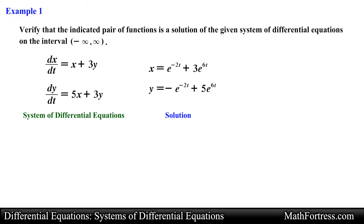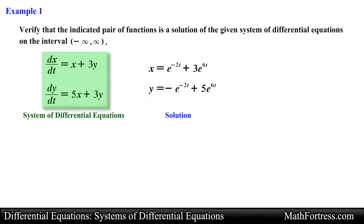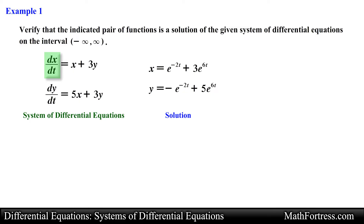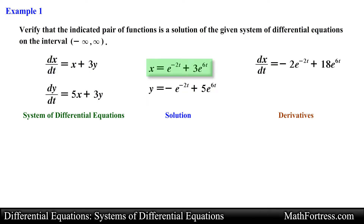Notice that we have two dependent variables, specifically x and y, both of which contain a single independent variable t. The procedure to verify a system of differential equations is very similar to verifying ordinary differential equations. It is just a matter of finding all the required derivatives and substituting them along with the functions into the system, making sure that the left and right hand side of each equation match. In this example we need to find the derivative of x with respect to time, so we apply the chain rule to the first function. Taking the derivative term by term results in the following expression for the derivative.